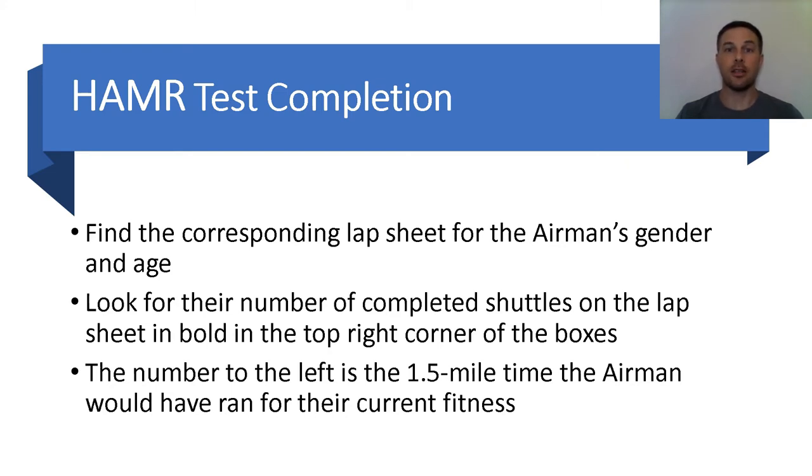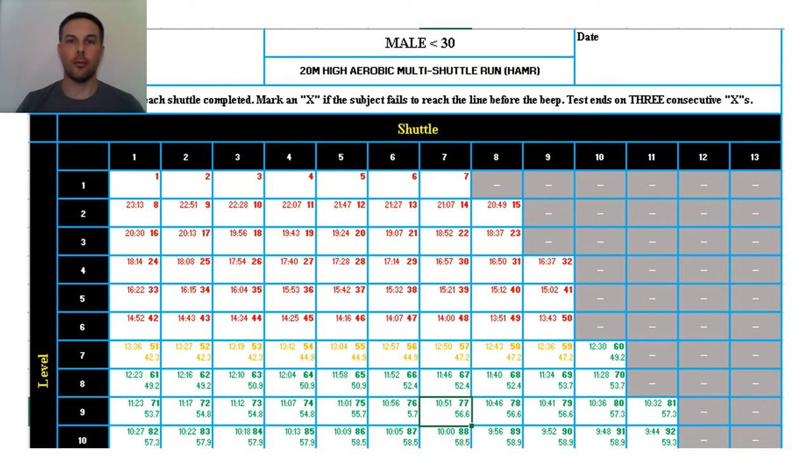I'll put the lap sheets in the description below. The auditory file for the HAMR sounds off with a beep and announces the level and the shuttle. There are two beeps for a level change where the iterations get closer together from the previous level.